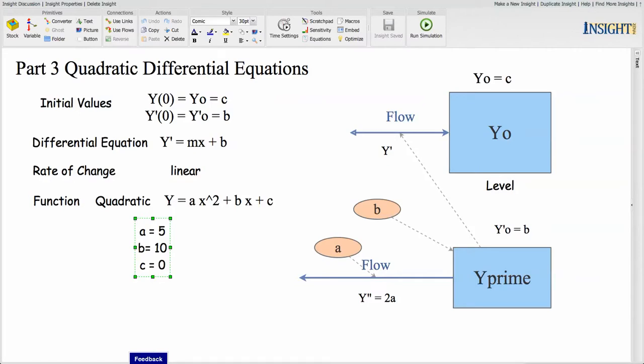So in this case, our model has two levels: y, and the initial value of y is y zero equal to c. And then this is our first level. And then the second one is y prime, which is our differential equation.